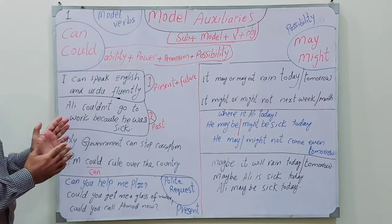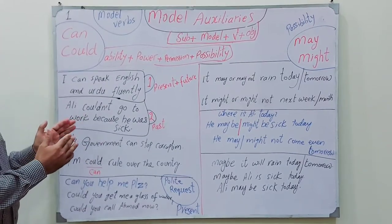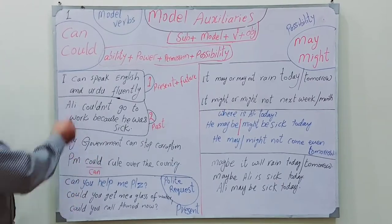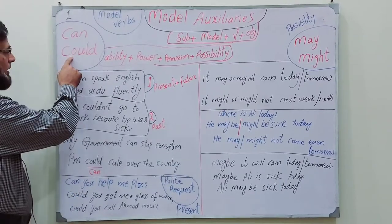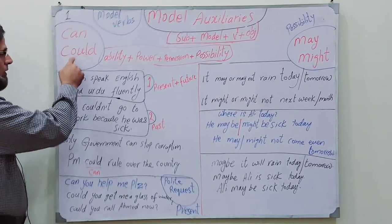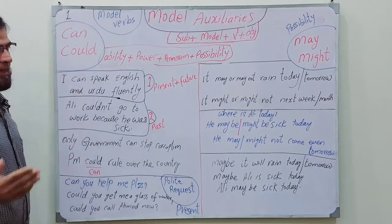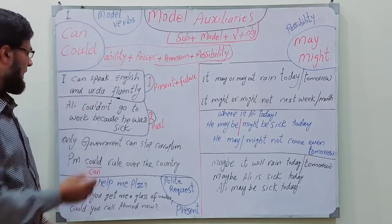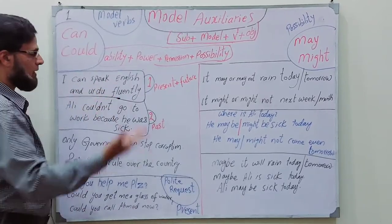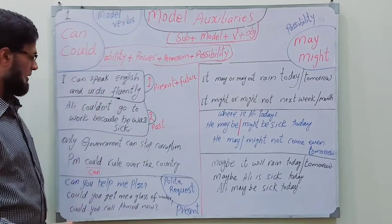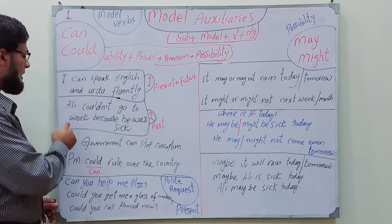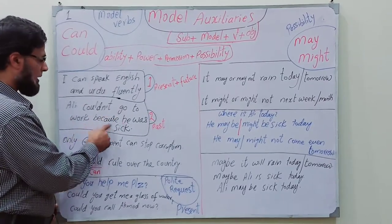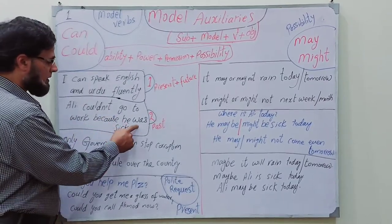Can and could: 'can' is used for present and 'could' is used for past. For example: 'I can speak English and Urdu fluently' — this is present. 'Ali could not go to work because he was sick' — this is past.